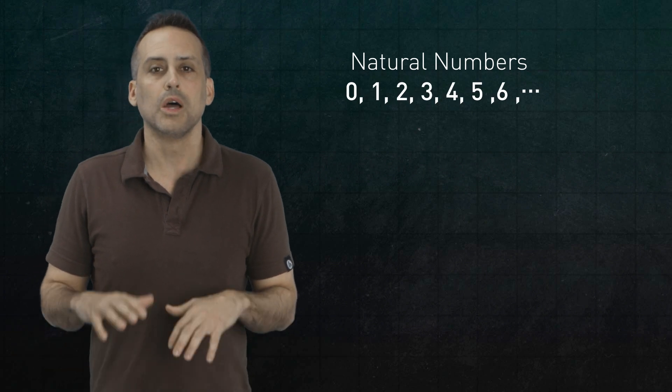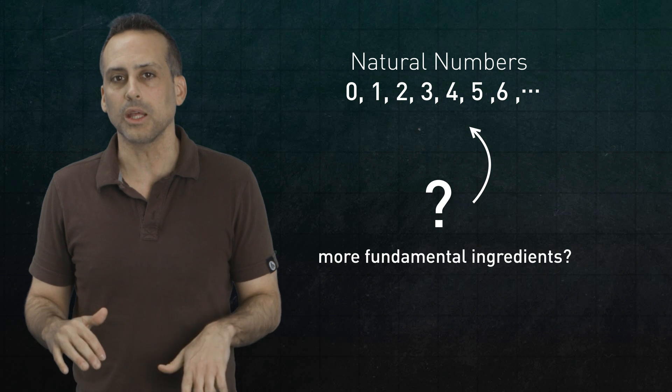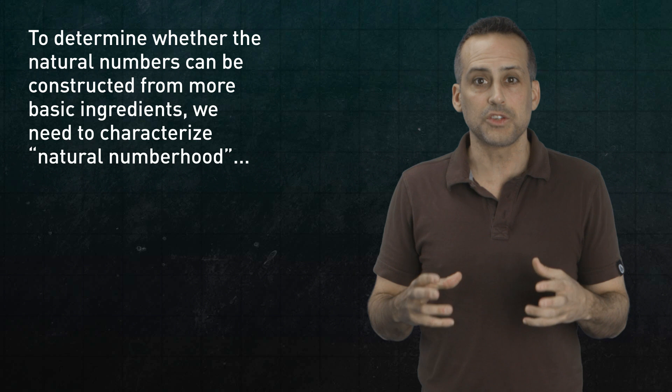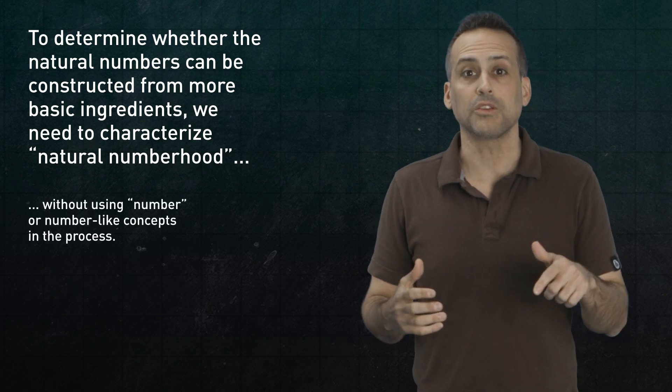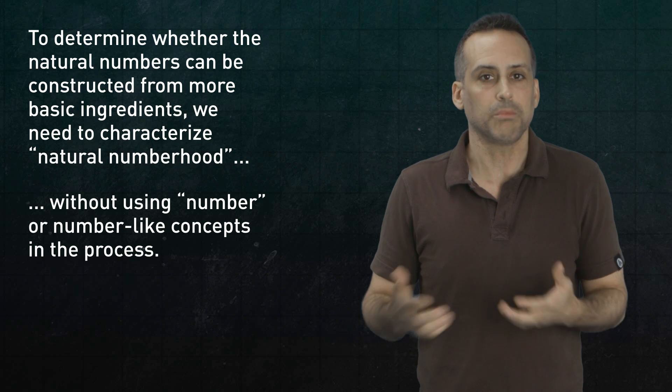0, 1, 2, 3, et cetera. Are they fundamental? Or can they also be constructed from more basic ingredients? Before we can tackle that question, we need a firmer handle on what exactly it means to be a natural number. More specifically, we need a way to characterize the essential features of natural numbers without referencing, directly or indirectly, things that we already know about the natural numbers. Because that would be circular.